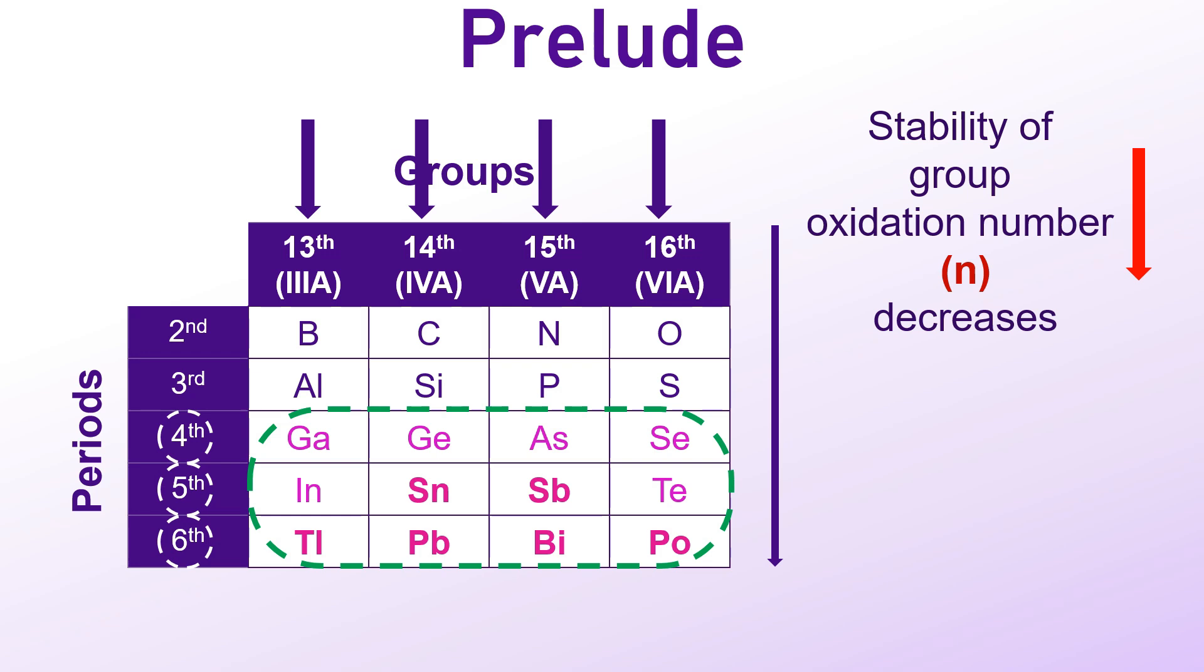while the stability of the oxidation state 2 units lower than the group oxidation number, represented by N-2, increases.